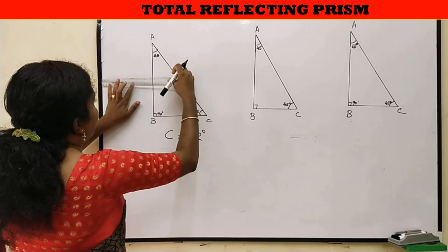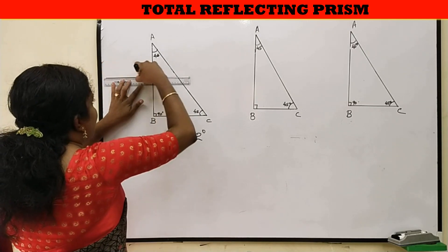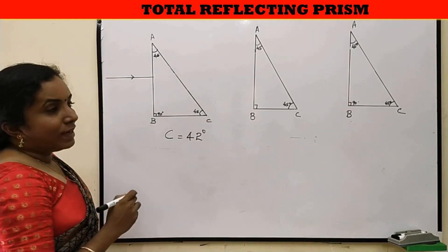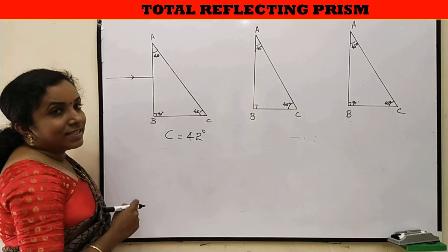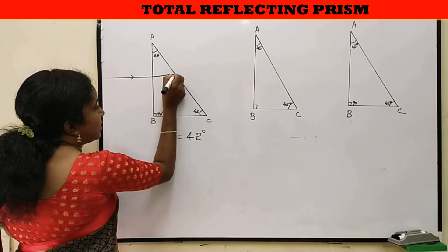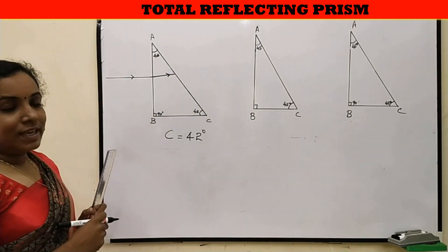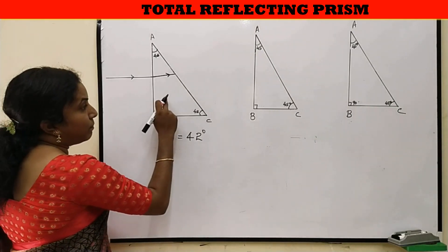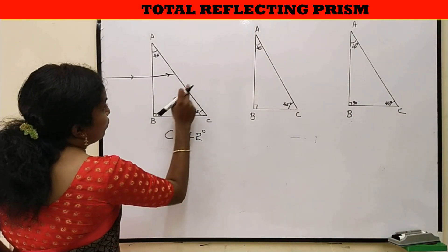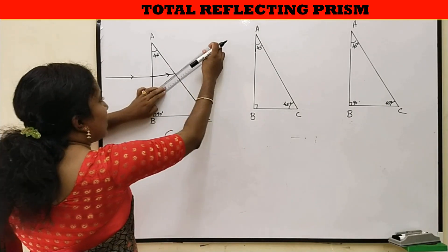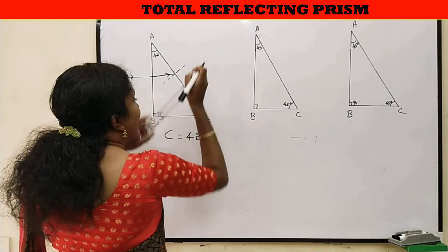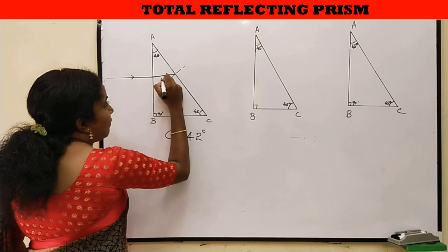Consider a ray of light coming normal to surface AB. Since it is coming normally, there will not be any refraction at surface AB, and the light ray travels straight to surface AC. Here, refraction would happen from glass to air — from a denser to a rarer medium. The angle of incidence at surface AC will be 45 degrees.